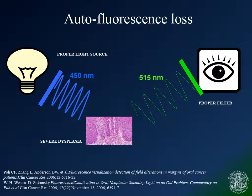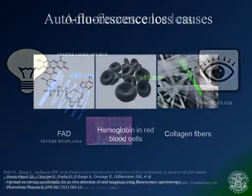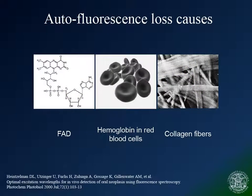That's because flavin adenine dinucleotide won't be oxidized in mitochondria affected by metabolic disorders, and therefore fluorescence cannot be produced. The disruption of the extracellular matrix, the hyperemia, and the neo-angiogenesis also contribute to reduce the emission of autofluorescence to a relevant extent.